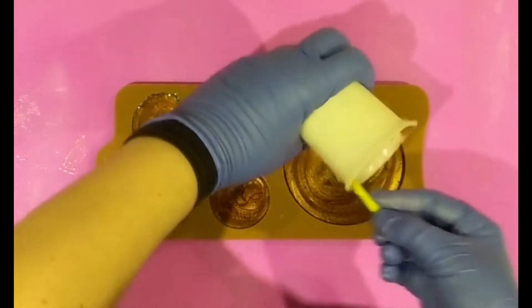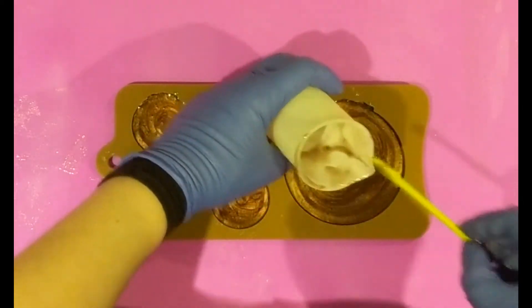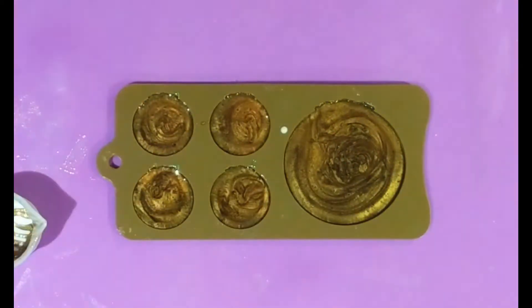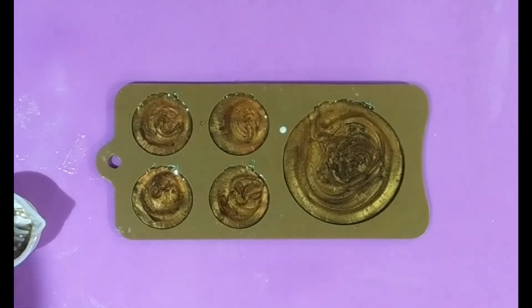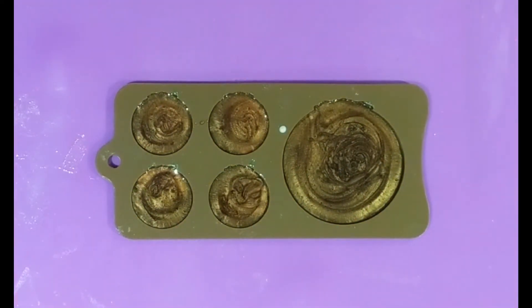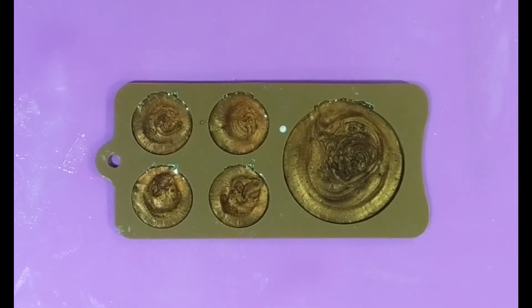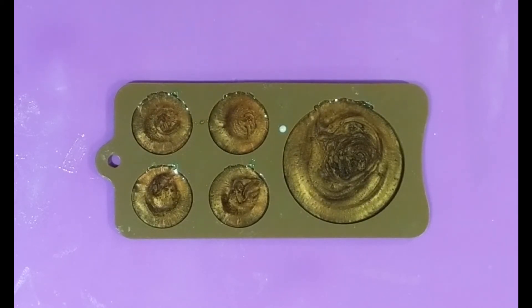So we're going to scrape out the last of that because resin is expensive. We want to use it all. Then we're going to leave this to cure for 24 hours before we pop it out of the mold and see how they look. And see my mat is purple. I tell you it's purple but it looks pink when I stand next to it and I really don't know why.